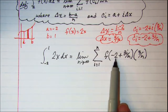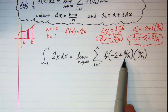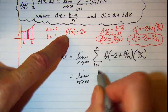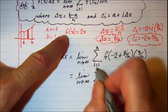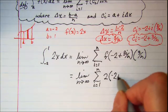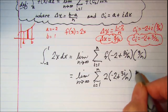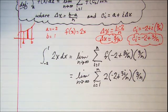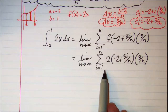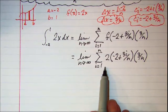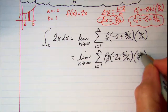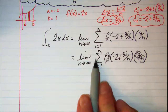Substituting the expression negative 2 plus 3i over n into our function f of x equals 2x, we get the limit as n approaches infinity of the summation as i goes from 1 to n of 2 times the quantity negative 2 plus 3i over n, times 3 over n. We will now take the constants 2, 3, and n out in front of the summation.